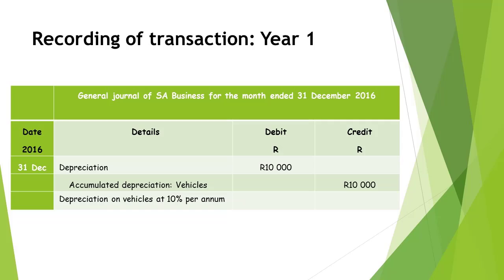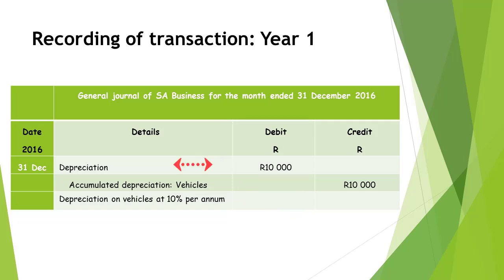Depreciation is recorded in the general journal. In our example, the depreciation will be recorded on the last day of the financial year, namely 31 December 2016. The date will appear in the first column. In the details column, we first write the account to be debited, which is depreciation in our example, with the amount of 10,000 Rand in the debit column.